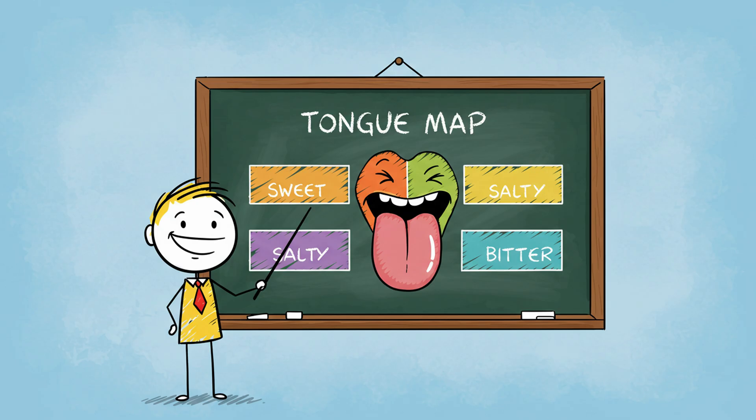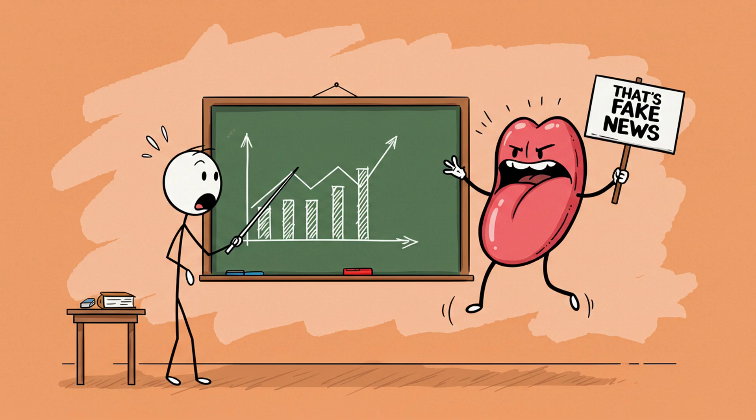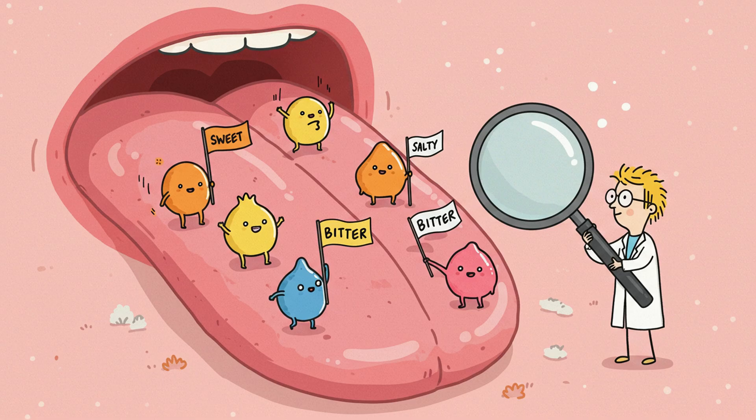Number four, the tongue map scam. Remember that neat little diagram from school? Sweet at the tip, sour on the sides, bitter at the back? Cute, but completely wrong.